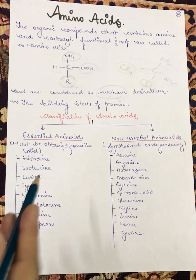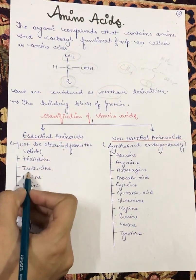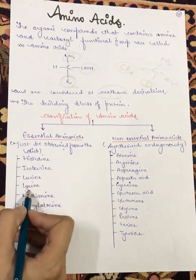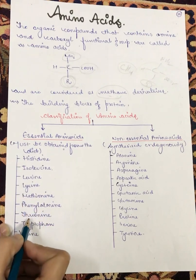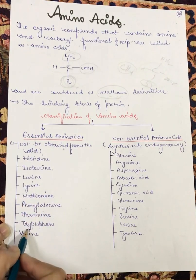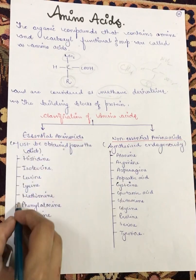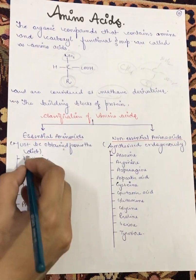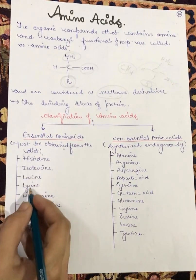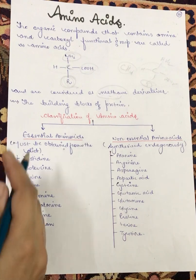The essential amino acids include histidine, isoleucine, leucine, lysine, methionine, phenylalanine, threonine, tryptophan, and valine. You can make a shortcut using the first letters: H-I-L-L-M-P-T-T-V to help memorize them.